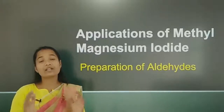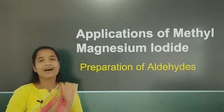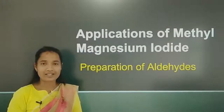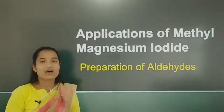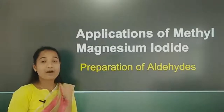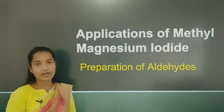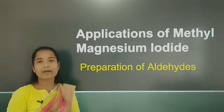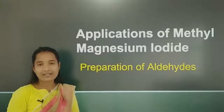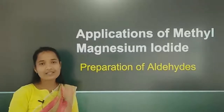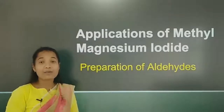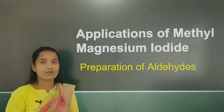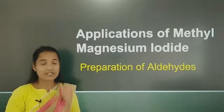In organometallic compounds, we use one common reagent — alkyl magnesium halides, also called Grignard reagent. In our previous class, we discussed the preparation of methyl magnesium iodide. The required apparatus are a round-bottom flask, reflux condenser, dropping funnel, and the required chemicals are methyl iodide, dry ether, and one or two pieces of iodine crystals.